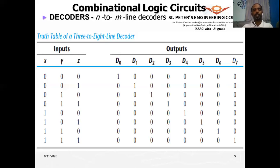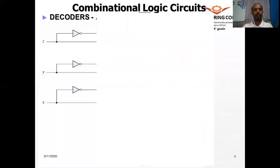We want to transmit some message and receive some message — that's where coding is used. It's a binary code: 000 means the first state, 001 means the second state. Each min term is segregated into a different state. We group each of the min terms into individual states — that is what we call a decoder circuit.